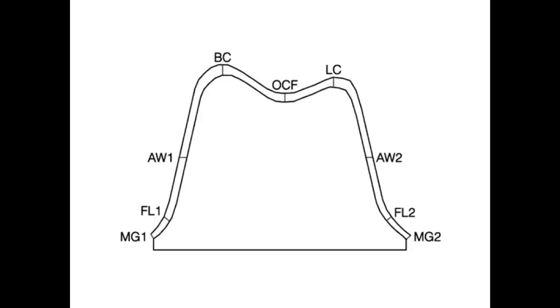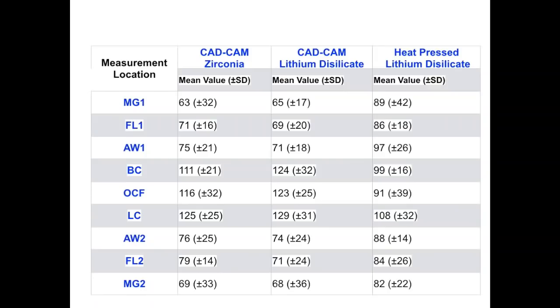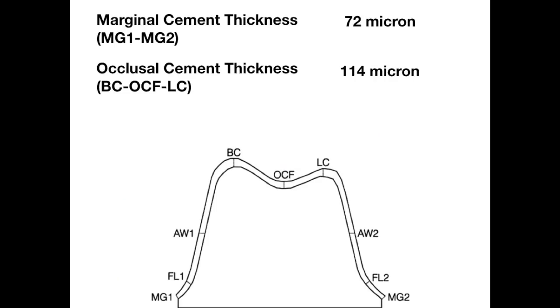They followed the same procedure as the other paper: they prepared the abutment, took impressions, produced the zirconia and lithium disilicate crowns, cemented them, and sectioned them. They then calculated the thickness of the cement at different reference points. The results showed that the marginal cement thickness was on average 72 microns — meaning the marginal gap of zirconia and lithium disilicate crowns averaged 72 microns — while the occlusal cement thickness was 114 microns.